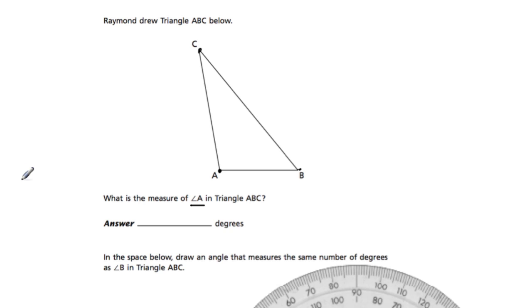What is the measure of angle A? They write angle A like that in triangle ABC. So they want us to use a protractor and measure this angle.